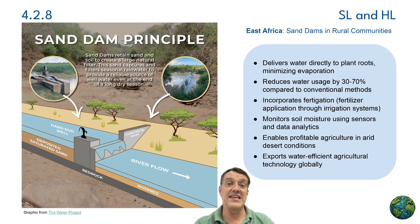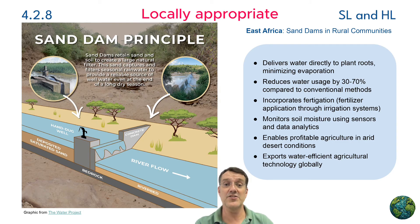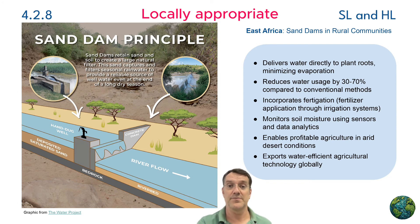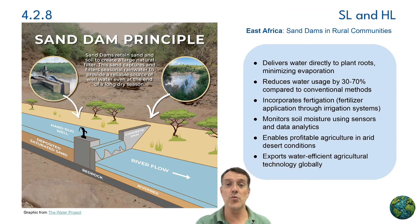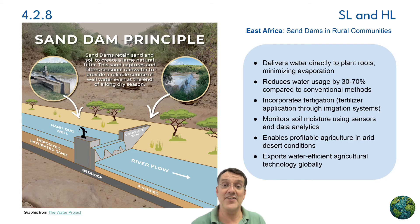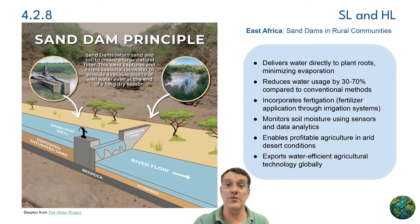Sand dams in East Africa represent a low-tech, community-based approach to water security. These structures retain sand and create natural water filters in seasonal riverbeds, capturing rainwater during wet seasons for use during dry seasons. Benefits include providing clean water for drinking and irrigation, particularly in arid regions with seasonal rainfall. Limitations include location-specific requirements, limited capacity, and potential ecosystem impacts from changing river flow patterns.